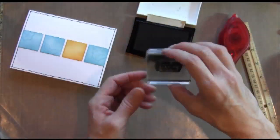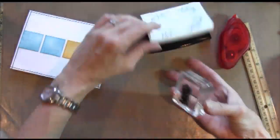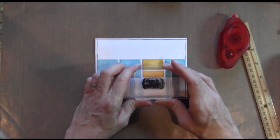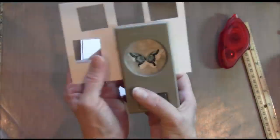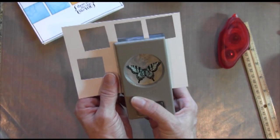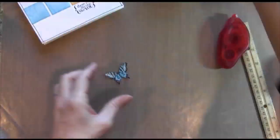Next, I'm going to stamp my sentiment. And I'm using VersaFine black ink, which is a fantastic ink for clear stamps. You get a really crisp image.